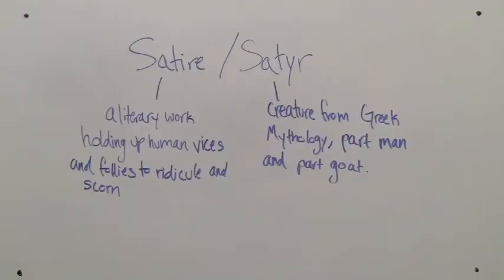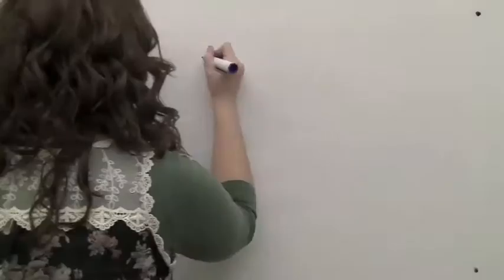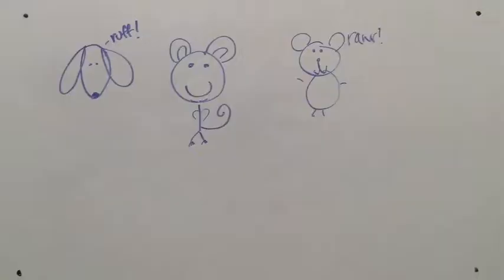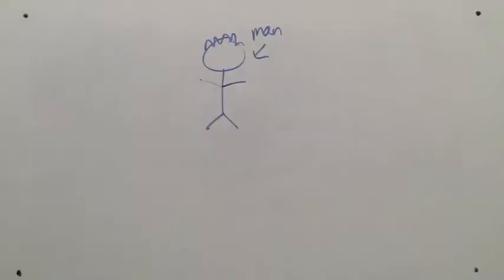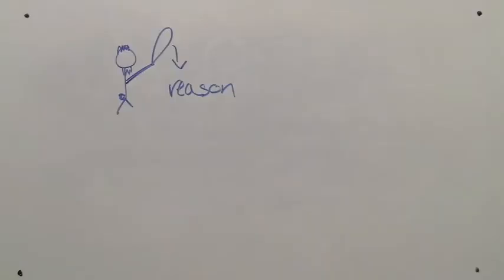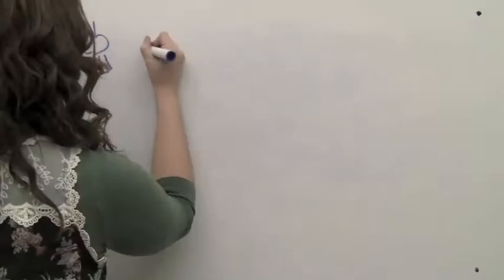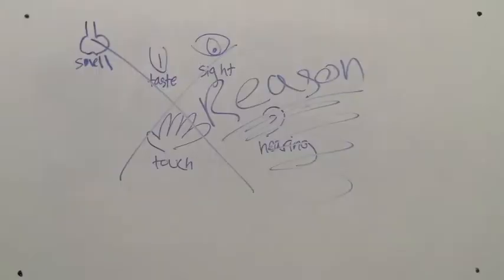Which makes the speaker of this poem, being a satyr, cleverly qualified to say things like, I'd be a dog, a monkey, or a bear, or anything but that vain animal. That vain animal being man. So basically, the satyr spends the first half of the poem attacking reason. He says that the reason that mankind uses is often wrong and goes against instinct and the five senses. He thinks that all of the philosophers are going to feel pretty stupid when they're dead and realize that they were wrong.